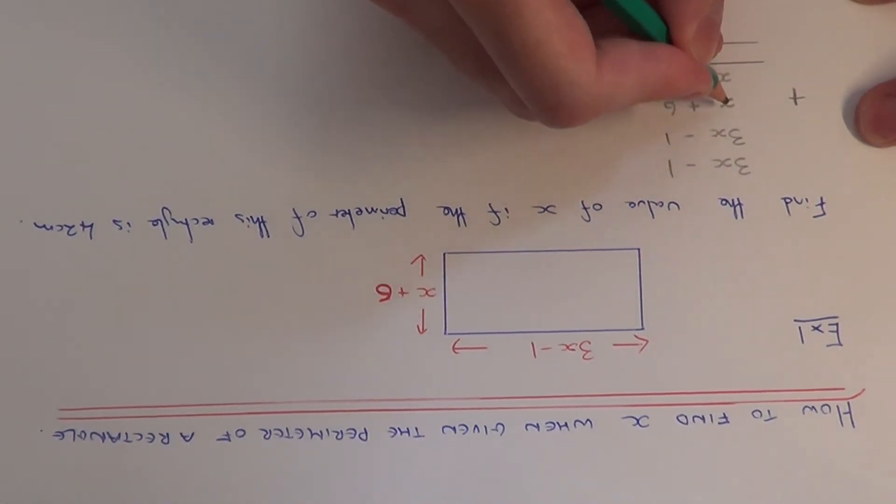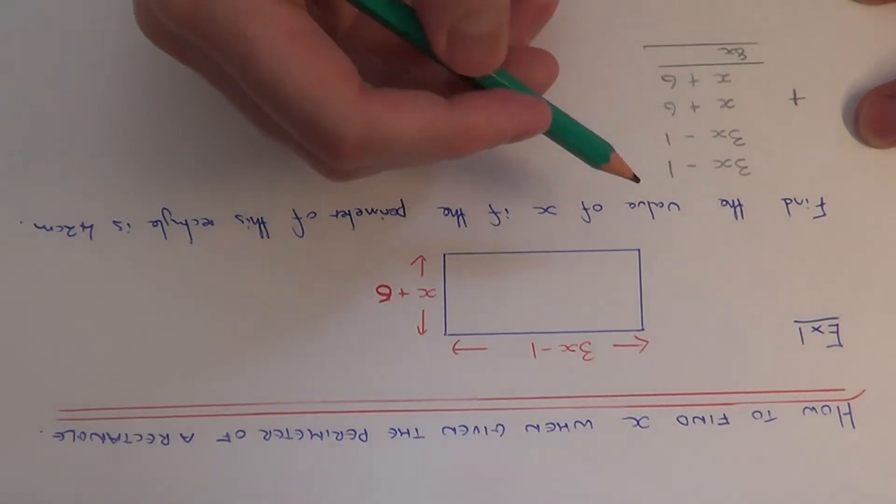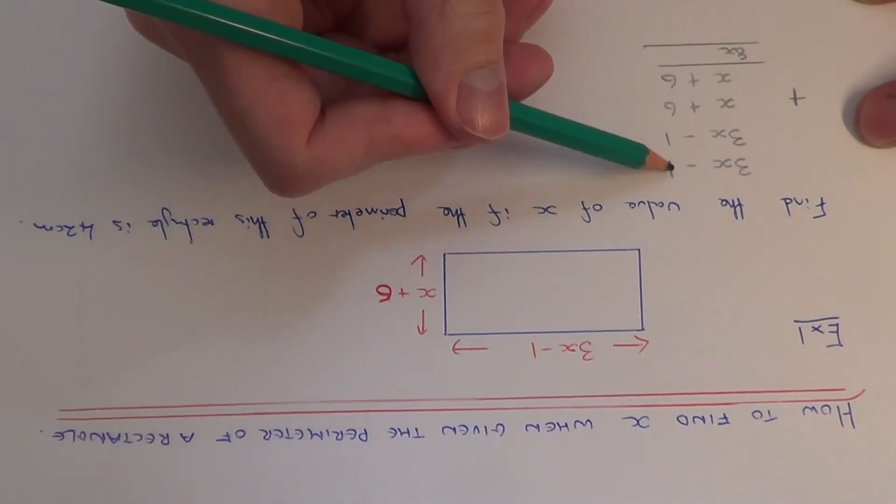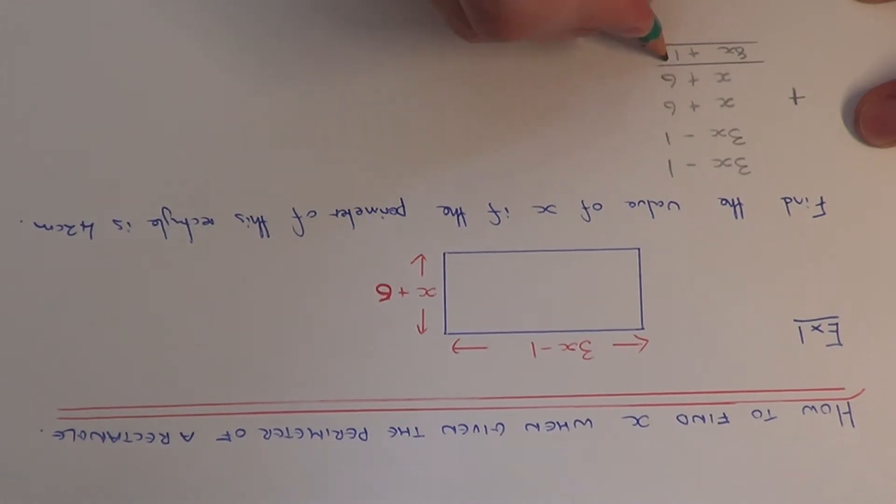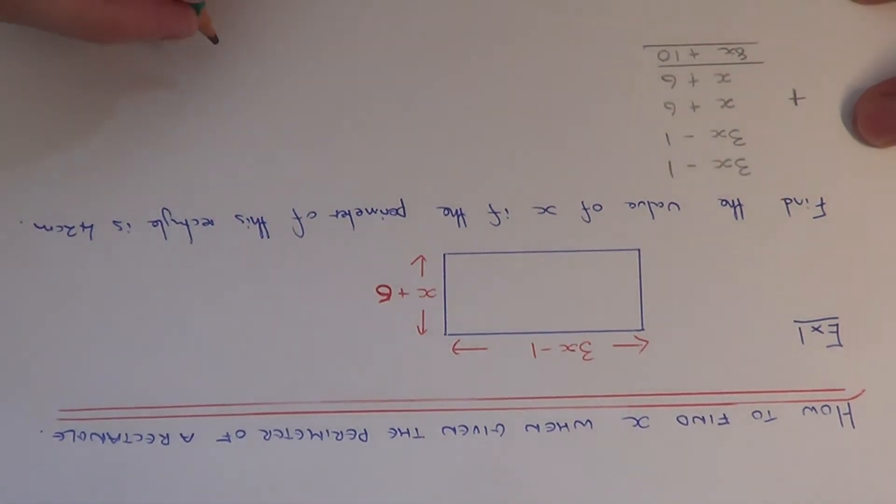3x add 3x add 1x add 1x gives 8x. And if we add up the numbers, minus 1 minus 1 is minus 2, plus 6 is plus 4, plus another 6 is plus 10. So the perimeter of our rectangle is 8x plus 10.